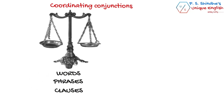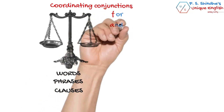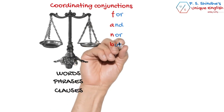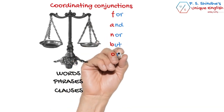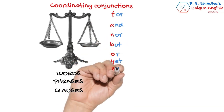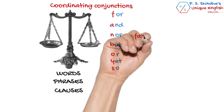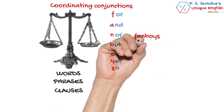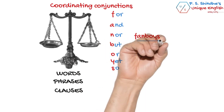The complete set of coordinating conjunctions is: For, And, Nor, But, Or, Yet, and So. The acronym FANBOYS is the best way to remember these seven coordinating conjunctions.